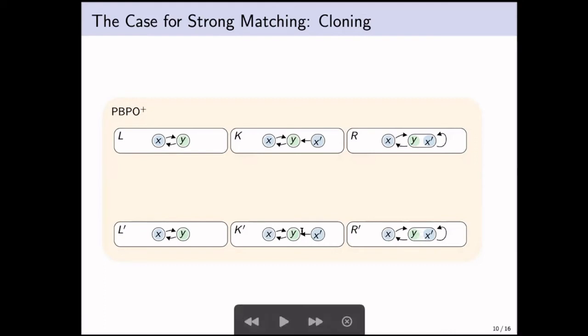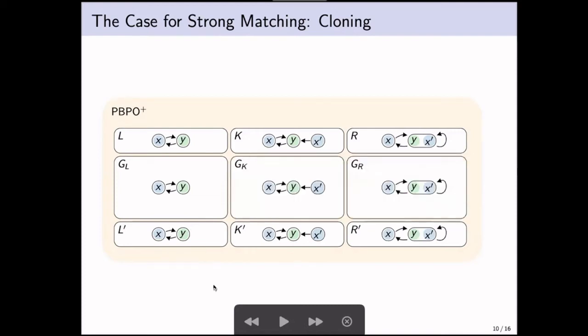A second example relates to cloning. In PBPO+, in L' here, we don't have any additional elements along the pattern. So we know that the only instance can actually be a graph that's isomorphic to it. And now when we perform cloning, we will clone the X and the edge towards the Y. We end up with just this sequence of graphs. And as you can see, we do first a clone and then we perform a merge where we end up with a loop here on this node.